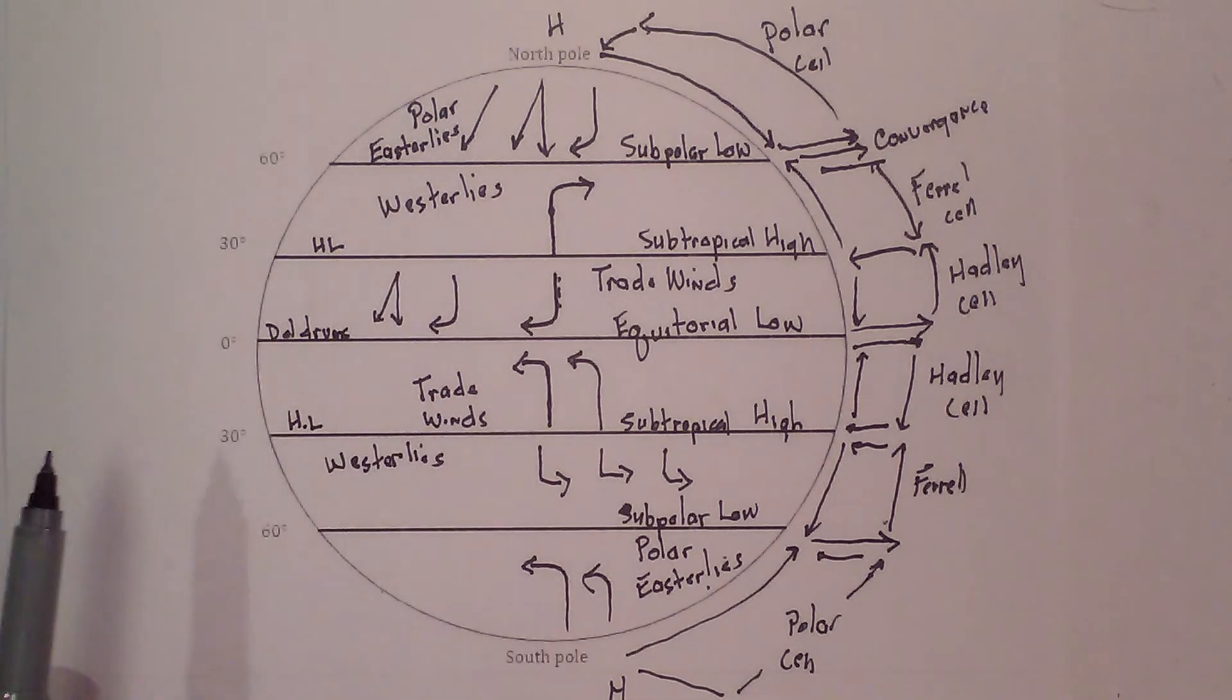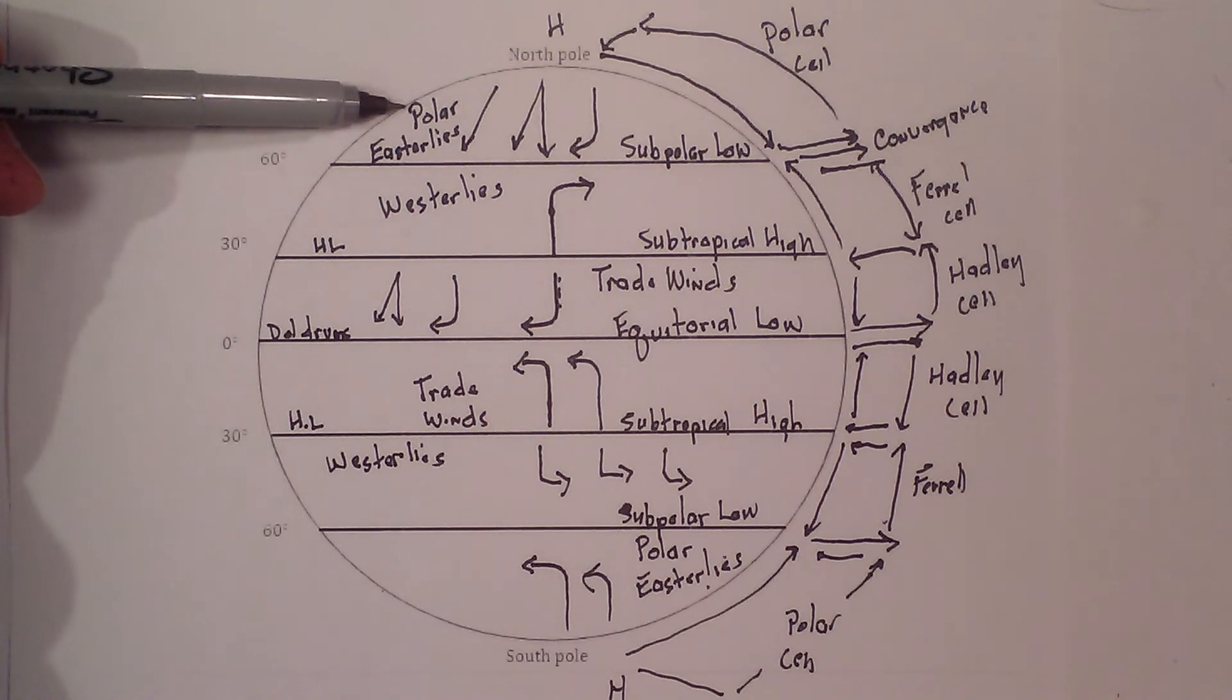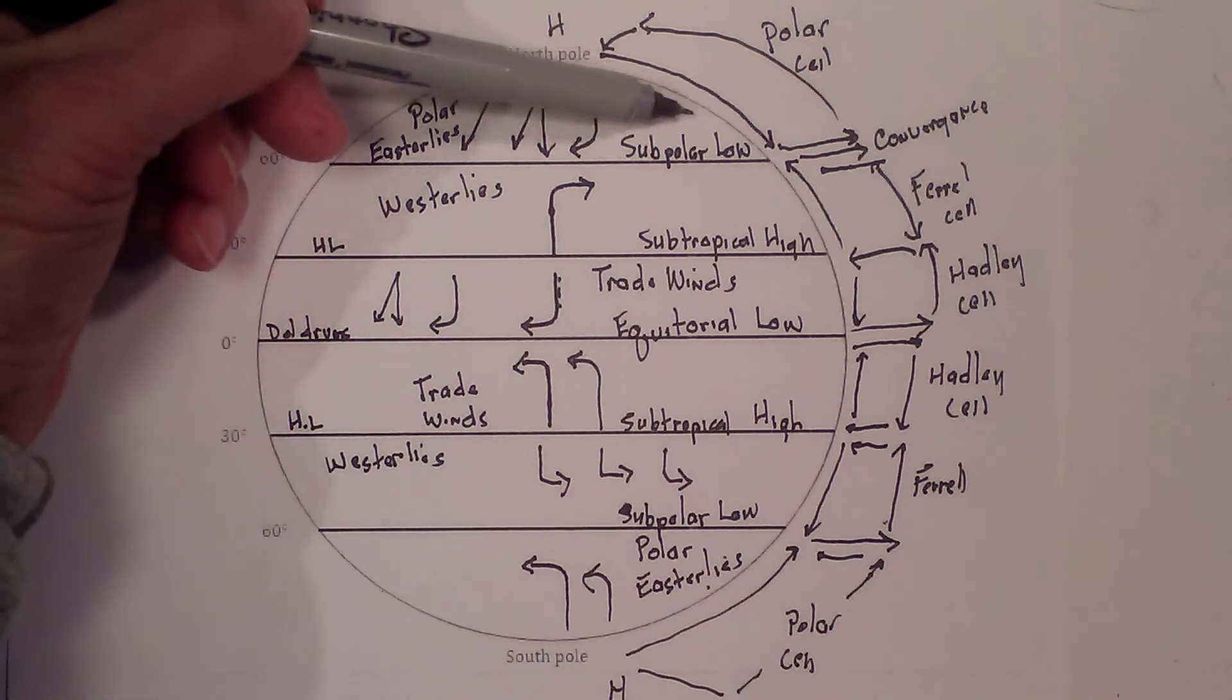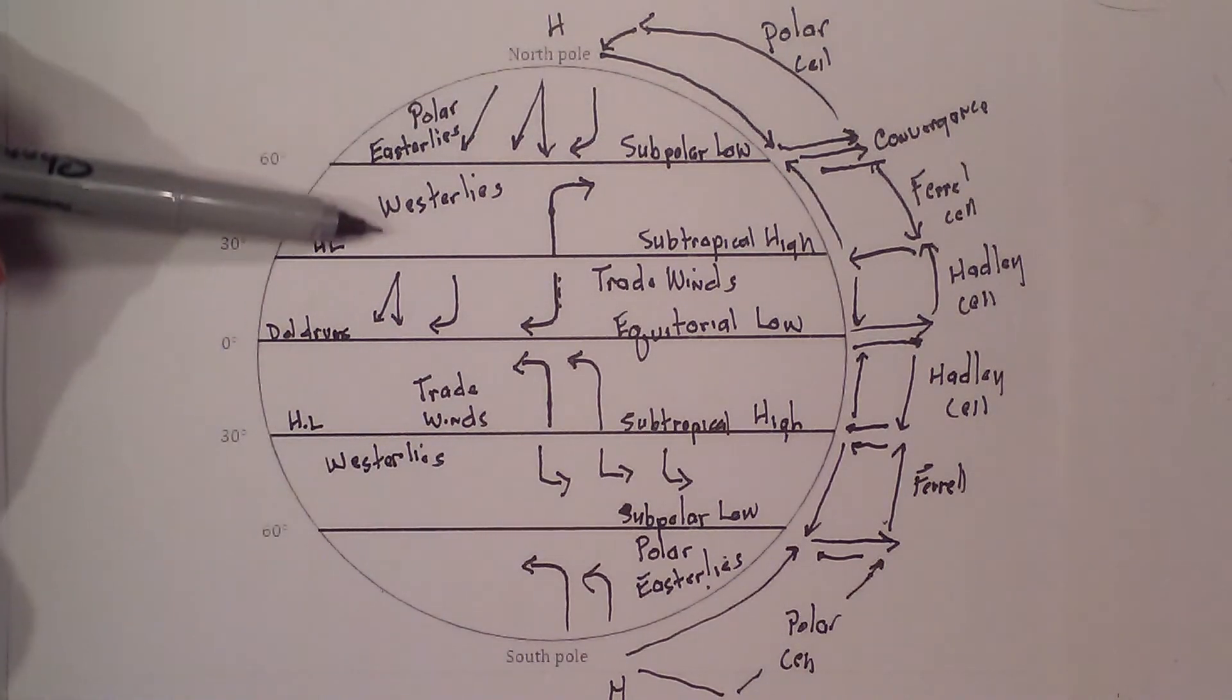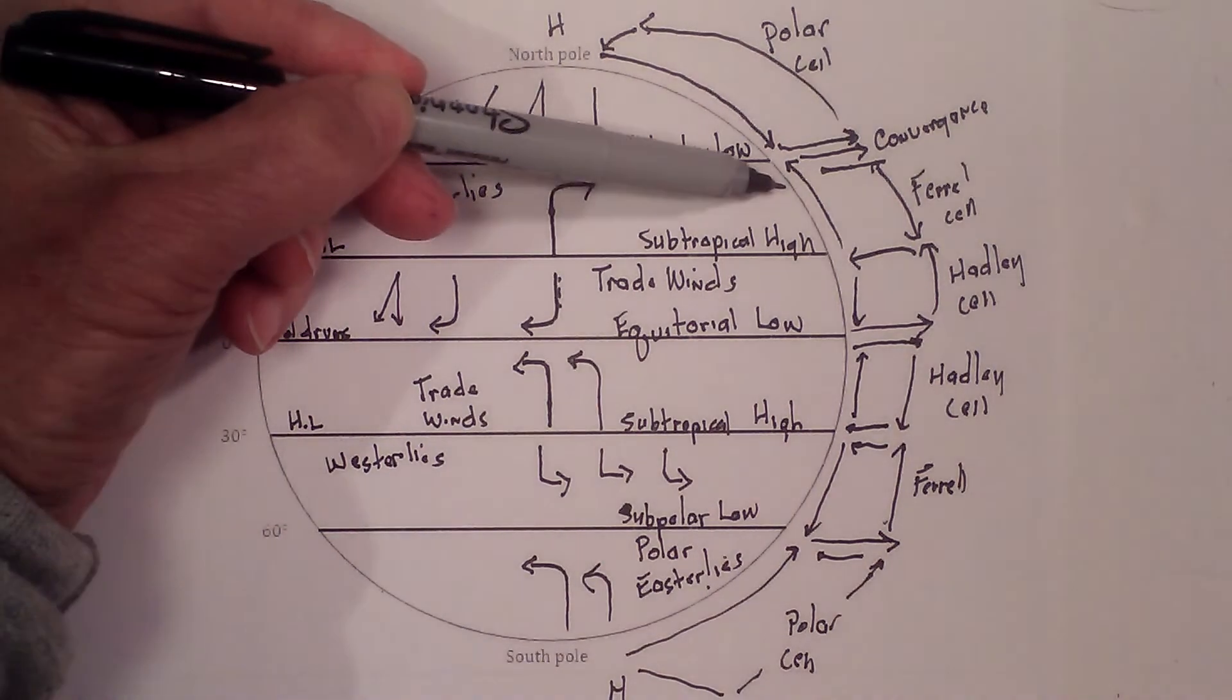So there we go. I left off the jet streams. Here are the major winds. Let me recap. You have the polar easterlies blowing from the north east.